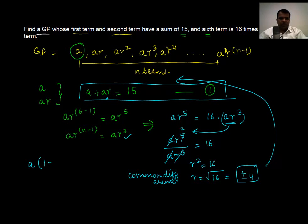So we will get a(1 + r) = 15. I just took a as common. So a(1 + 4) = 15, or a = 15 divided by 5, which is 3.